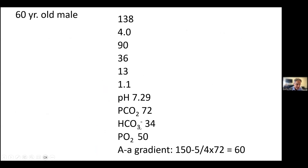In acute respiratory acidosis, you just need the bicarbonate buffer in extracellular fluid and cells — you don't need a kidney. The PCO2 went up by roughly 30, so the bicarbonate should go up by three times 2, which is 6. You can see it didn't — the bicarbonate is up by 9. So this cannot be acute respiratory acidosis.